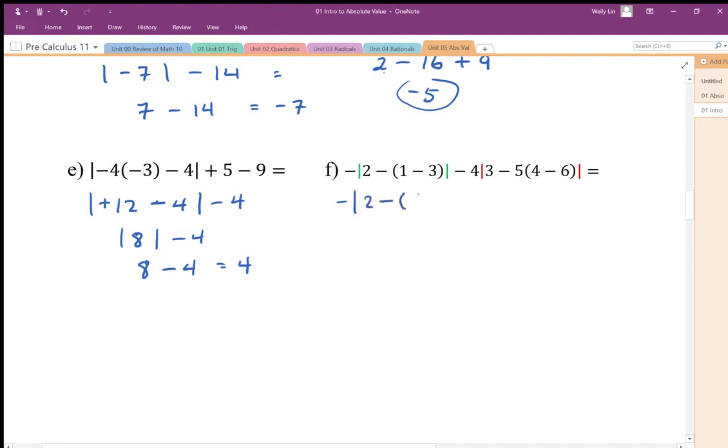Here we have brackets first, so we're going to end up with one minus three. Here we need to do the brackets first again, so three minus five times four minus six. We're going to do inside the brackets. Minus and negative is positive, so we end up with four minus four. Here we need to do the multiplication before we do the subtraction, so negative times negative is positive ten. We end up with negative of positive four minus four times absolute value of thirteen.